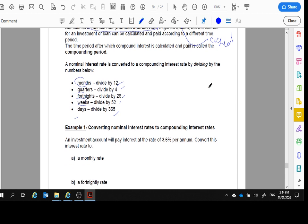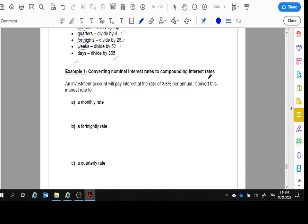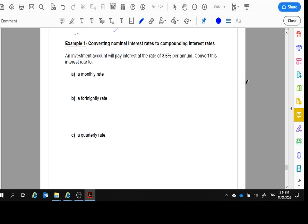Example one says convert the nominal interest rates to compounding interest rates. An investment account will pay interest at the rate of 3.6% per annum, that's per year. Convert this interest rate to a monthly rate. Well, if it's 3.6% per annum and we want it monthly, we're going to divide by 12 since there's 12 months in a year, which gives us 0.3% per month.